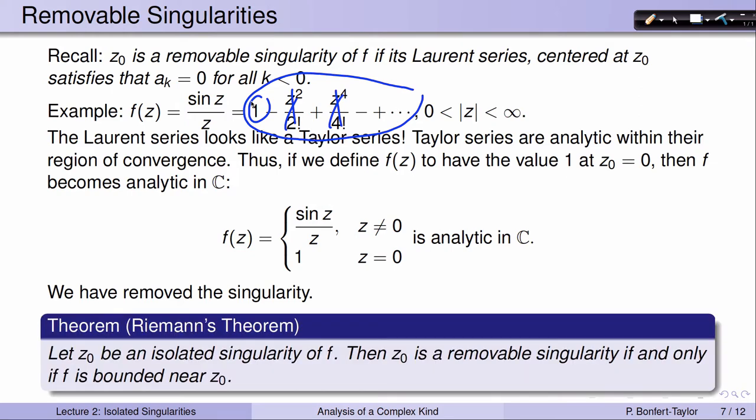Here's a theorem: Suppose z0 is an isolated singularity of f. Then z0 is removable if and only if f is bounded near z0. We just saw that once we've removed the singularity, we're left with an analytic function, which is clearly bounded near z0. But the theorem says this goes both ways: once you've determined that you have an isolated singularity and the function happens to be bounded nearby, you know automatically it's a removable singularity.